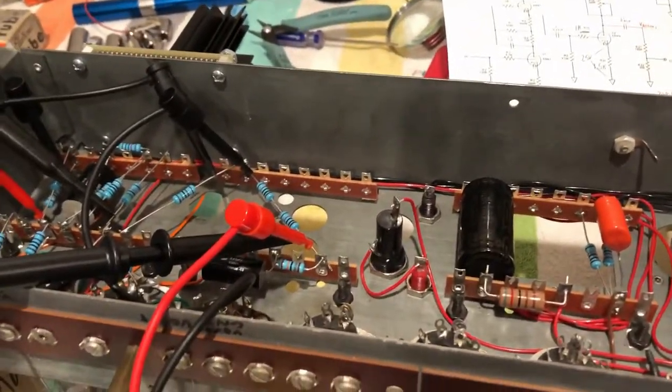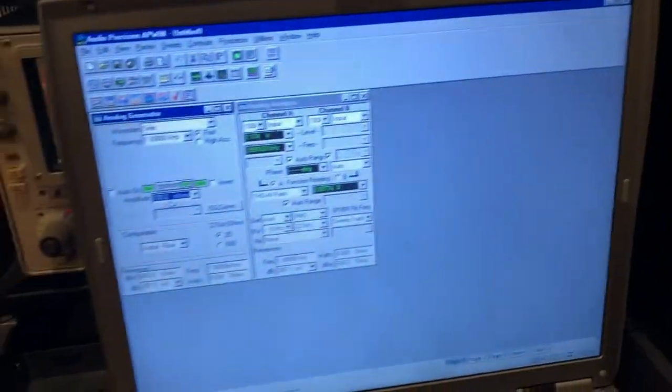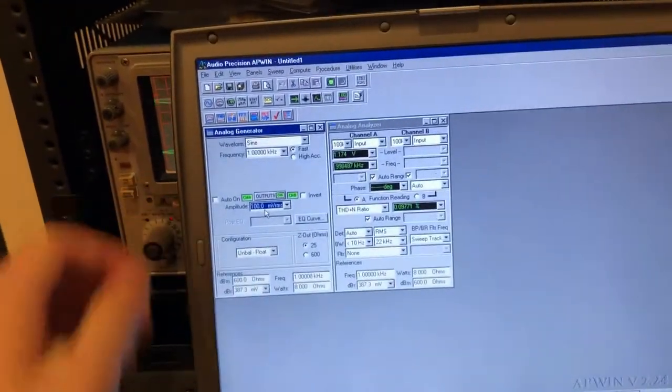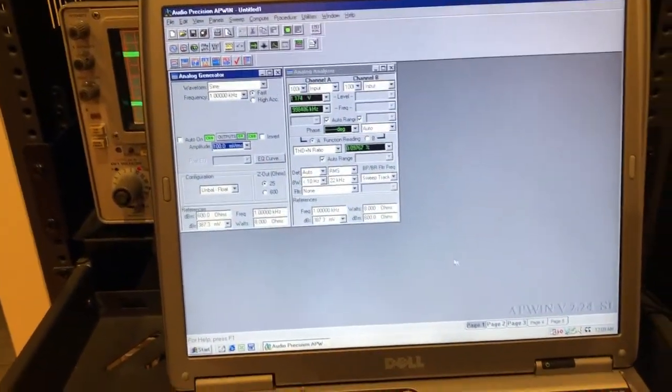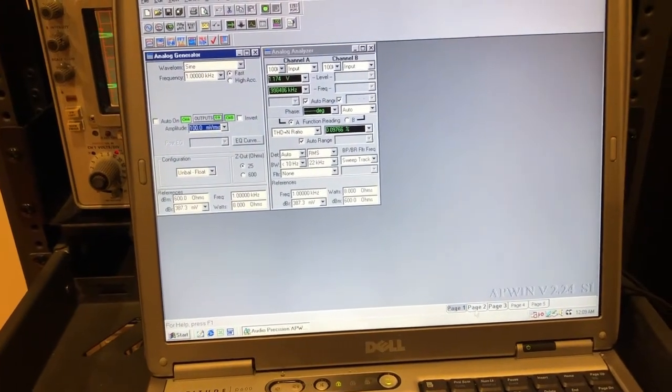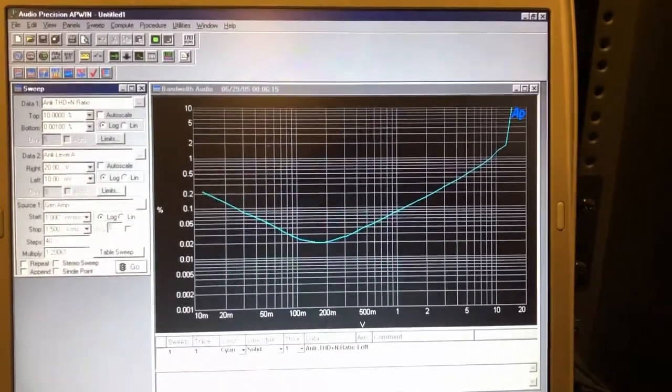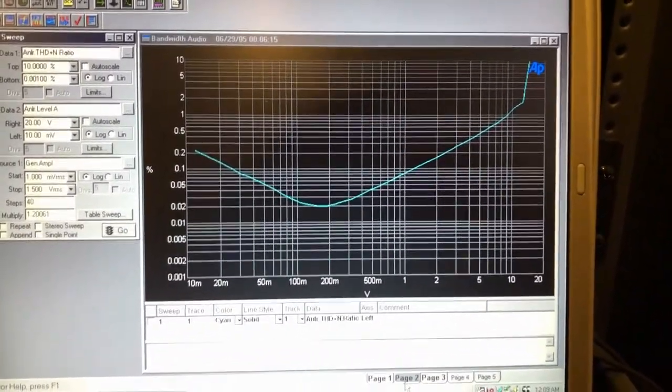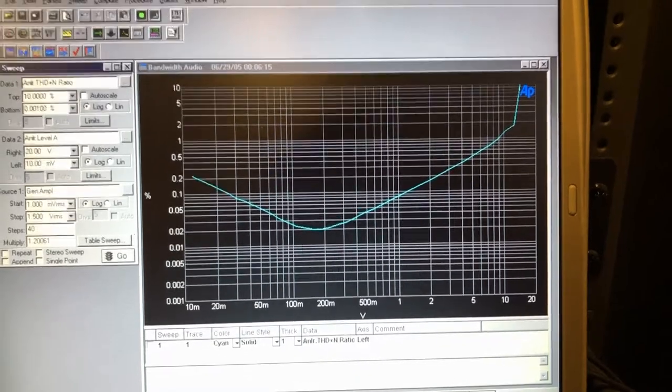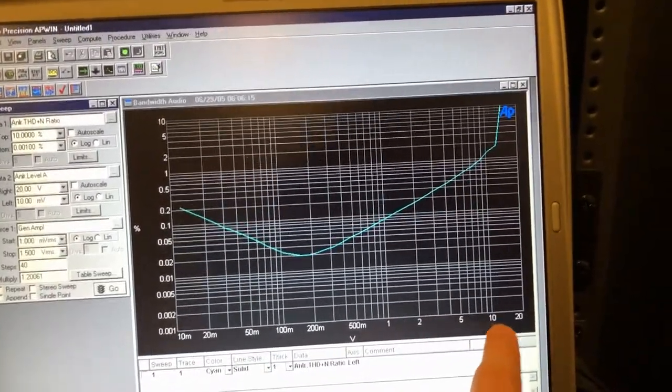So the output is connected to our audio precision. And actually I just ran a curve of its THD versus output voltage. So that output voltage on the x-axis looks rather low. But remember, as we said, per our previous analysis...